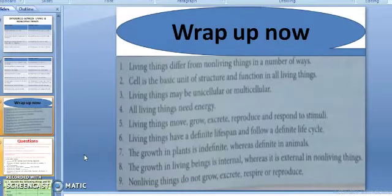Now see the wrap up of the chapter. This chapter has been finished now. Let's have a quick review of the chapter. Living things differ from non-living things in a number of ways which we have seen in the table. Cell is the basic unit of structure and function in all living things. All living things are made up of cells. Living things may be unicellular or multicellular. All living things need energy for different life processes. Living things move, they grow, they excrete, reproduce and respond to stimuli.